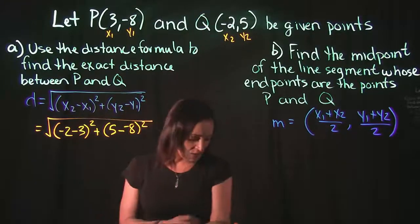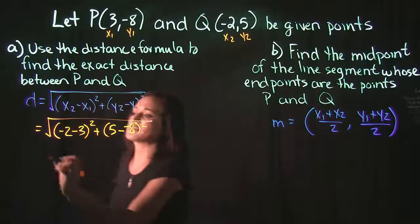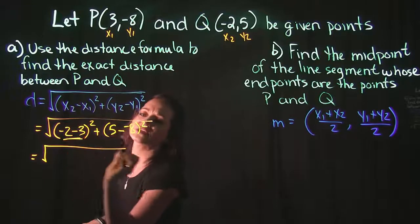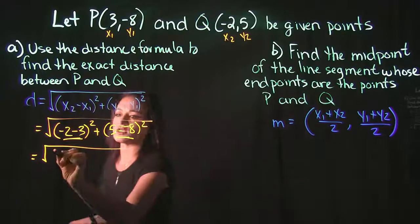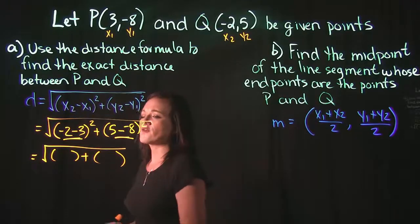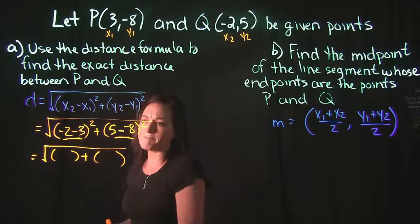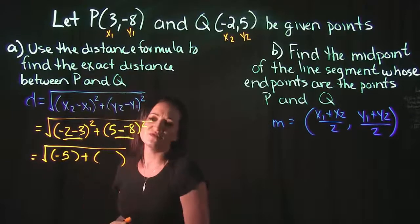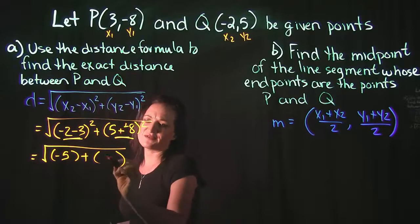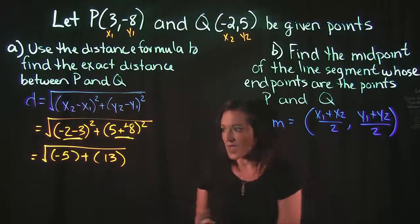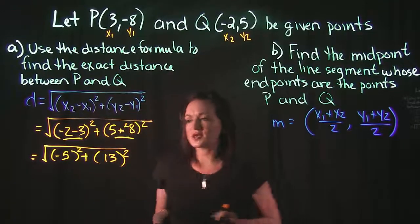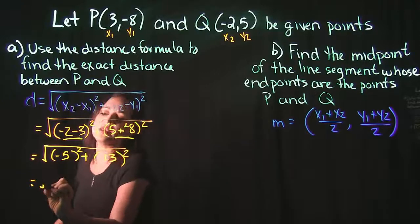Now all we really have to do is some cleanup with this problem underneath the square root. Let's take care of the subtraction inside here. For our first subtraction, -2 minus 3 gives us -5, and 5 minus -8 gives us 13.